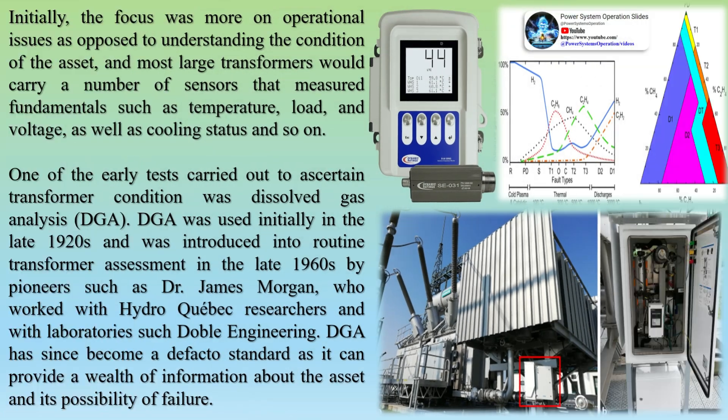Transformer Dissolved Gas Analysis (DGA) is a technology used to monitor the health of transformers. It works by analyzing the gases dissolved in the transformer oil, which can indicate various types of abnormal events occurring within the transformer. There are two types of DGA monitoring: key gas monitoring and multi-gas monitoring.